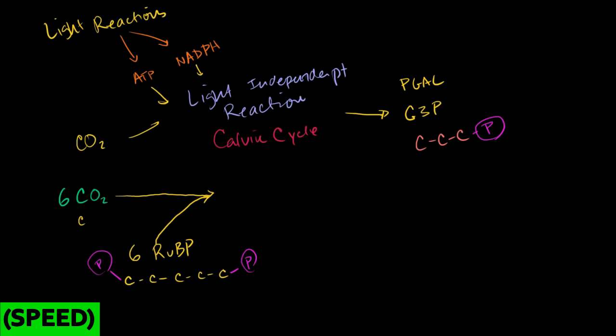These 2 react together, and this is a simplification, these 2 react together, there's a lot more going on here, but I want you to get the big picture, to form 12 molecules of PGAL, of phosphoglyceraldehyde, or glyceraldehyde 3-phosphate. It has 3 carbons and then it has a phosphate group.